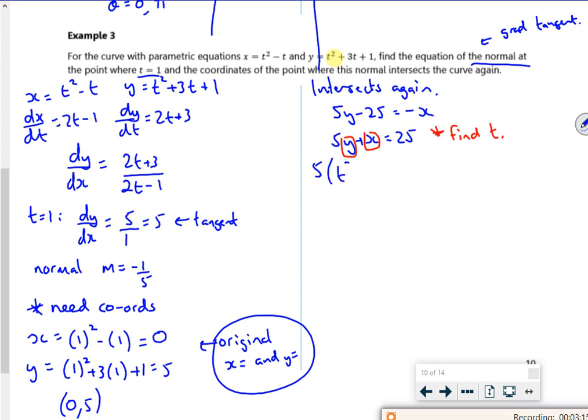So I'm going to replace with the original equation. So it's 5 lots of t squared. So we've done this before where we've replaced. And then t squared minus t. So I've got 5t squared plus 15t plus 5. I've got t squared minus t is 25.